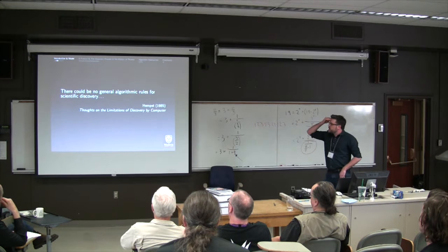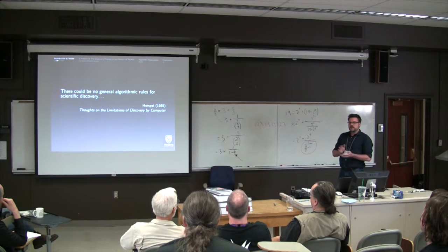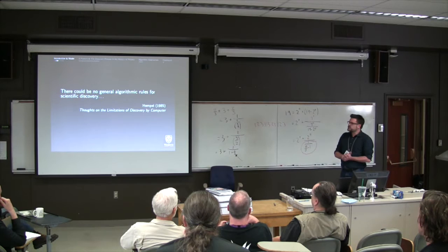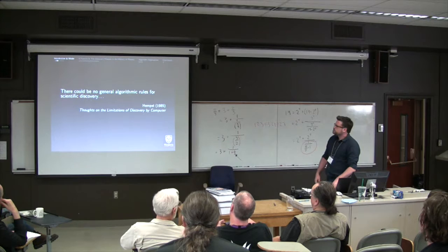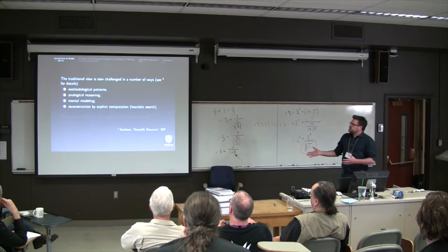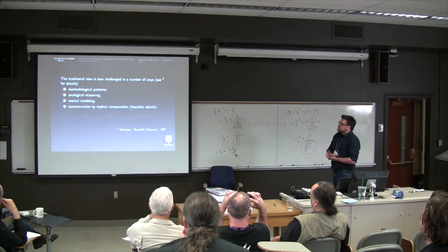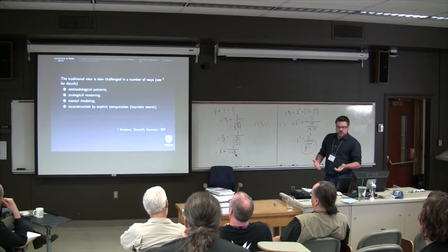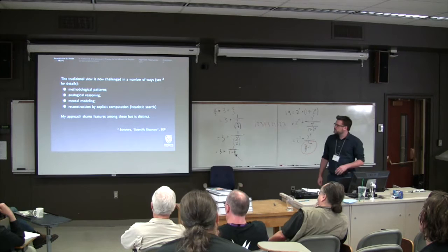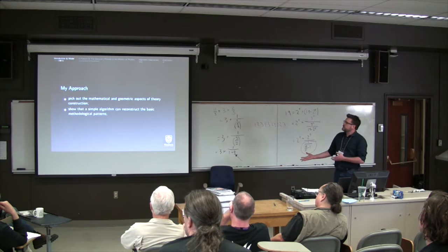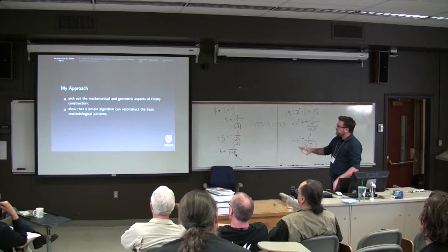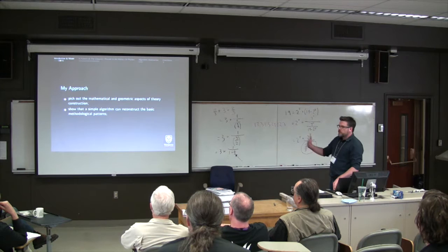Hempel had this view expressed in 1985, there could be no general argument rules for scientific discovery. So this is now something that's being called into question with Ernest Davis' talk yesterday, in particular. But also current work in automatic discovery results in computational science. So this traditional view is now challenged in a number of ways. It's lots of people who have rejected the old story, and if you want some details, there's an SEP article on it. So some of the possibilities are methodological patterns, analogical reasoning, mental modeling, and heuristic search. So what I'm doing is a little bit different, but it incorporates features of a number of these approaches.